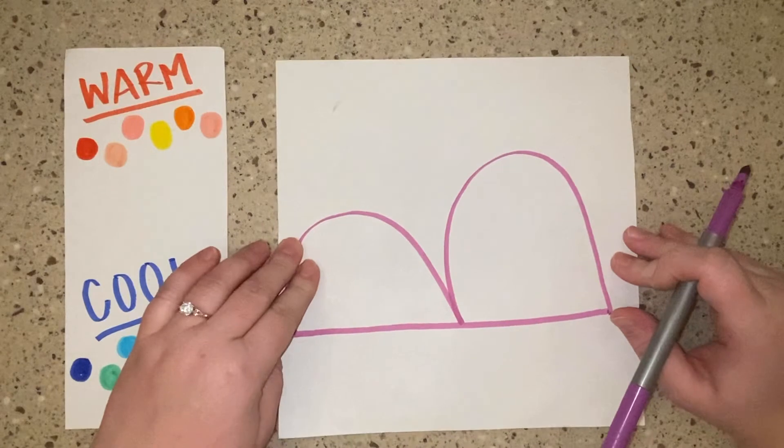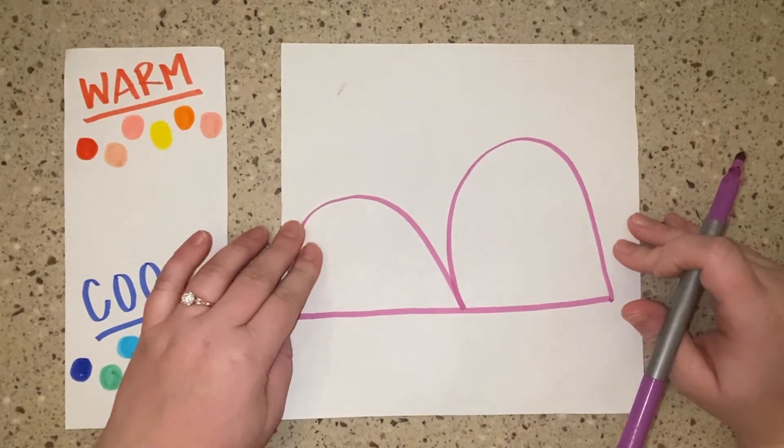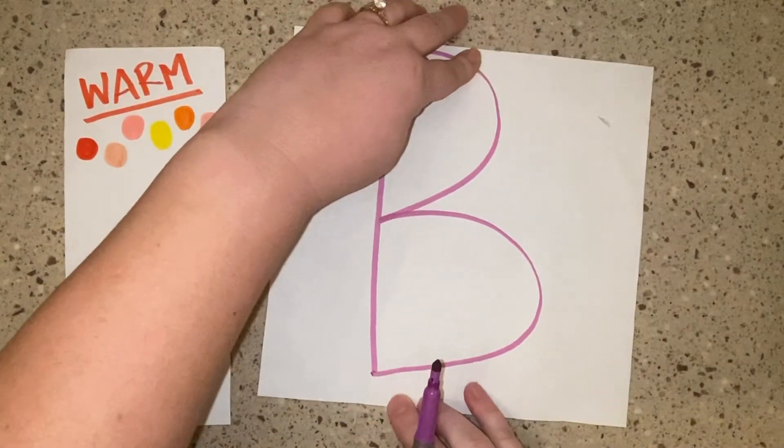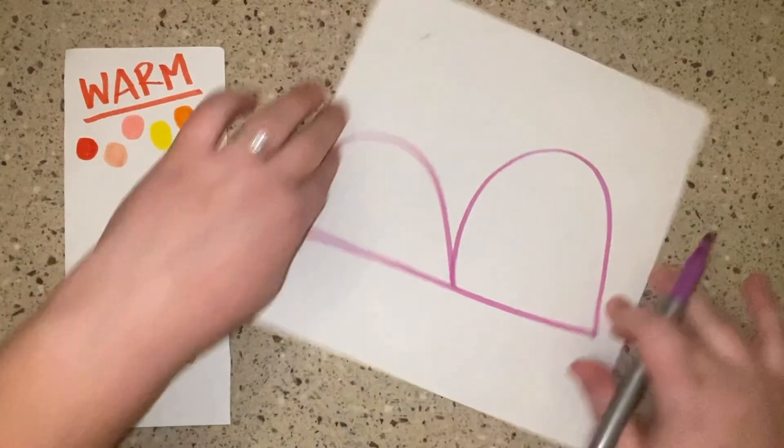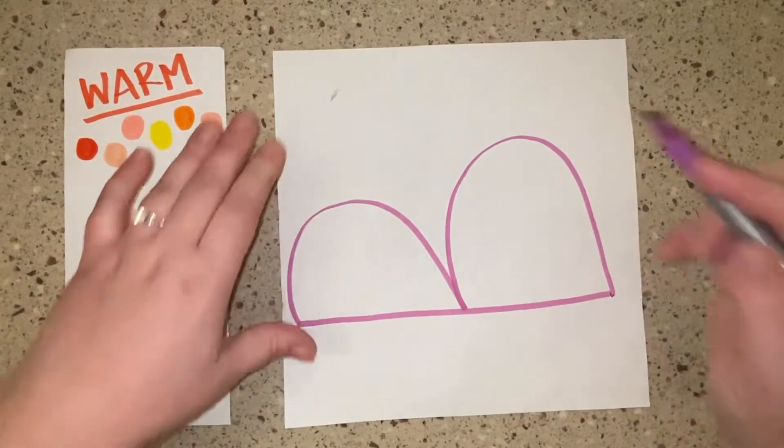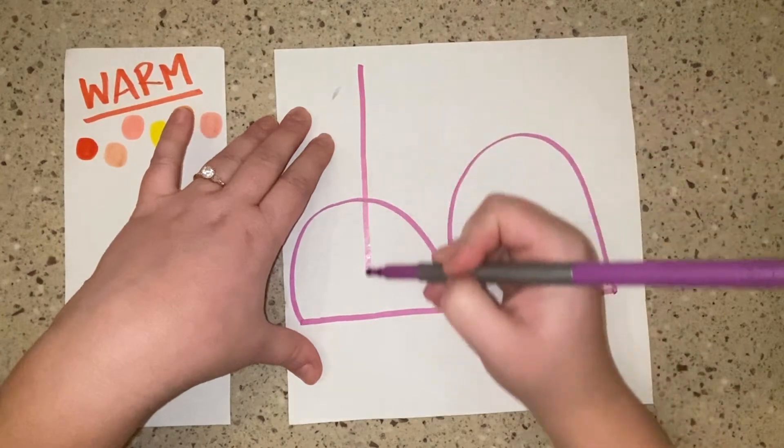Now I'm going to rotate my paper once to the left. Let me show you that one more time. Now I'm going to draw my capital B again.